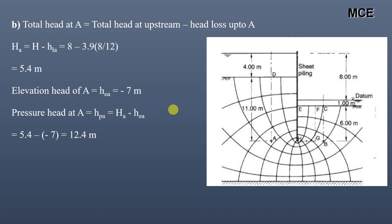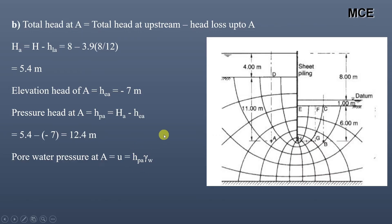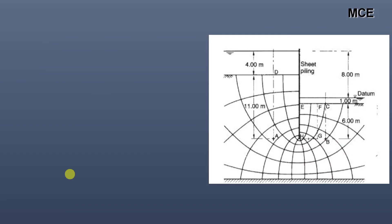Now that we have the pressure head at A, we can calculate the pore water pressure at A, which is given as the pressure head at A times the unit weight of water. This equals 12.4 times 9.81, which is equal to 121.64 kilo Pascal.